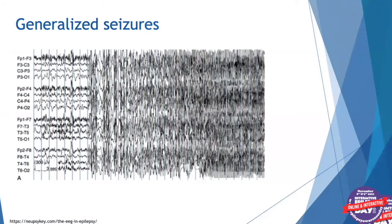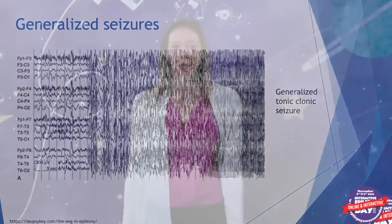This is another example of a generalized seizure — a generalized tonic-clonic seizure, or what many people think of when they picture a convulsive seizure. It's very high voltage, much of it due to muscle activity from generalized shaking, which can make it hard to see the underlying pattern.